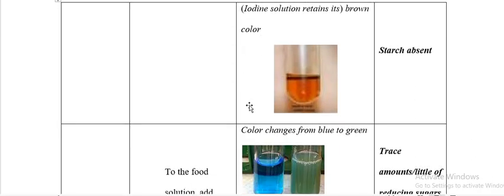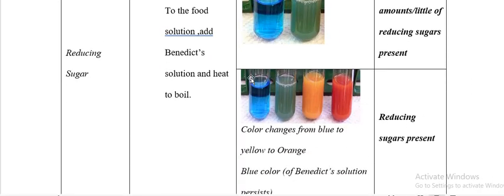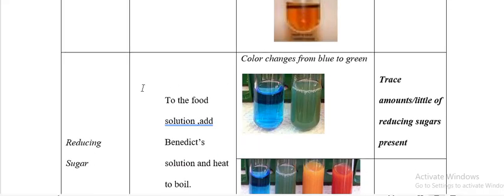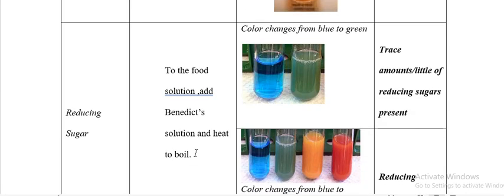Let's move to reducing sugars. The procedure: to the food solution, add Benedict's solution and heat to boil. When writing Benedict's, you must start with a capital B, then apostrophe between T and S. Don't forget to write 'heat' because you must heat.